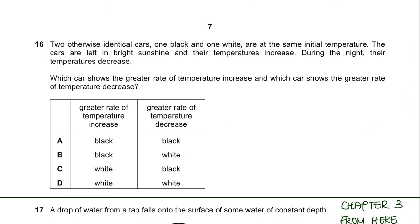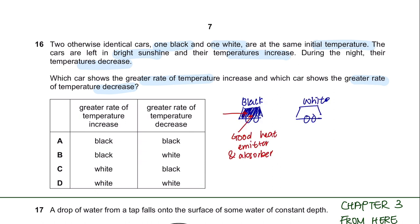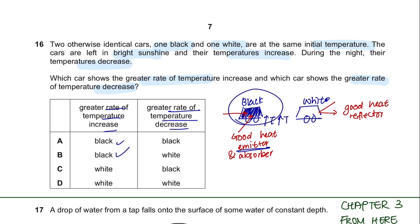Question 16. Two otherwise identical cars—one black and one white—are at the same initial temperature. Left in bright sunshine their temperatures increase; during the night their temperatures decrease. Which car shows the greater rate of temperature increase and which shows the greater rate of decrease? A black surface is a good heat absorber and emitter, while a white surface is a good heat reflector. Greater rate of increase means it absorbed more heat—black. Greater rate of decrease means it emits more heat—also black. So the answer is E.